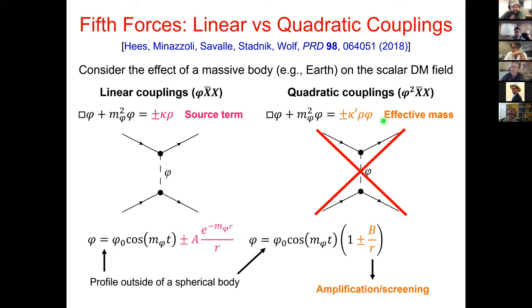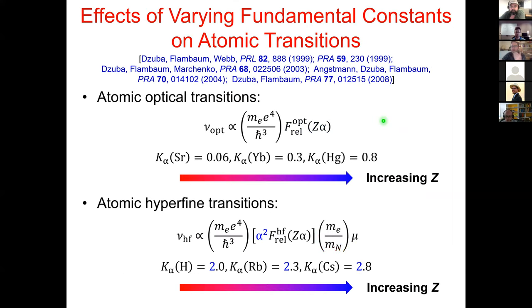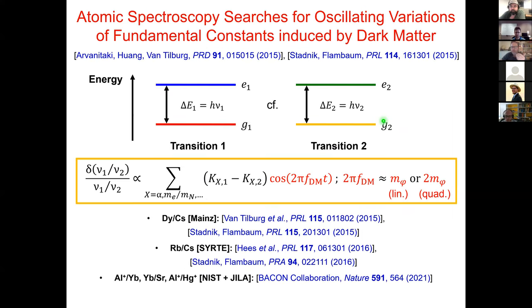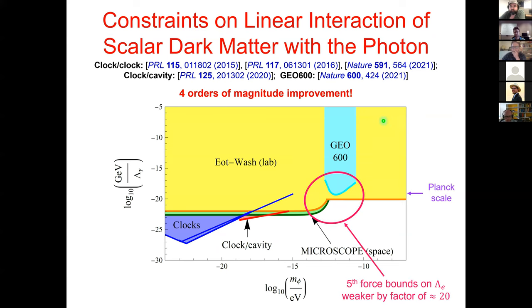A second question was raised about the parameter space exclusion plots shown towards the end of the talk: specifically, whether the experiment is probing a region where these bosons can account for all of the dark matter, and whether by construction these searches require the bosons to constitute all of the dark matter.